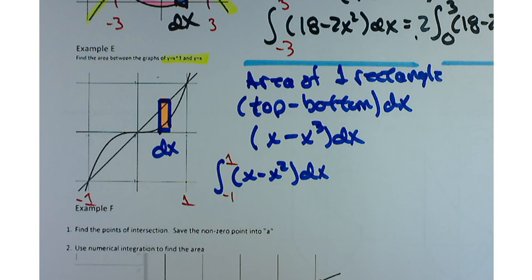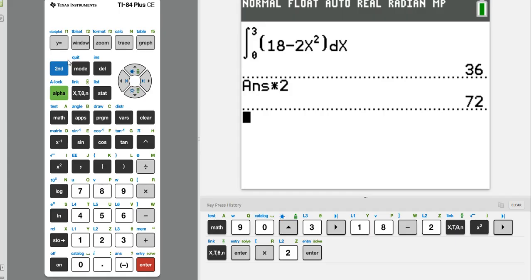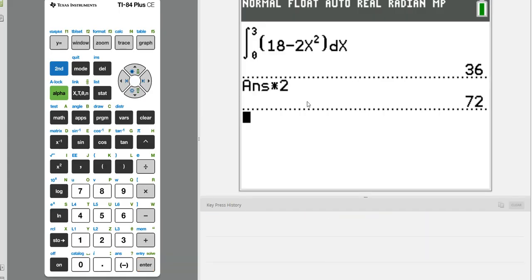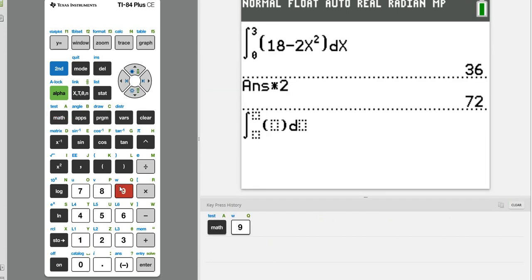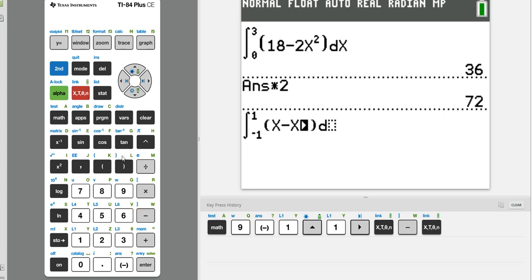Now, take out your calculators and do that. Tell me what answer you get. Math nine. Negative one to one of x minus x cubed dx. What are you getting? Caleb, what did you get? Zero.